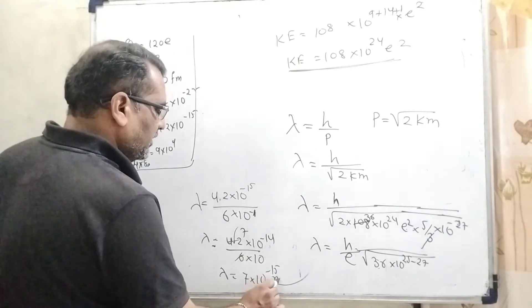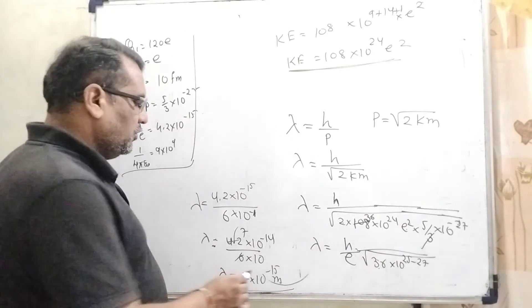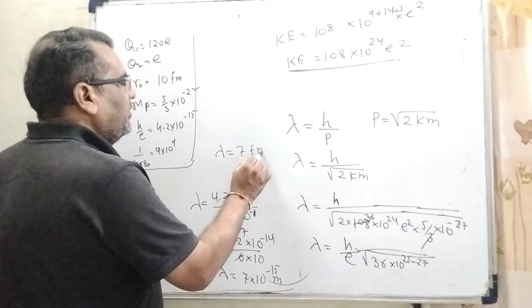So here our answer should be in Fermi as given in the question. Therefore the answer for lambda is 7 Fermi. Is it okay?